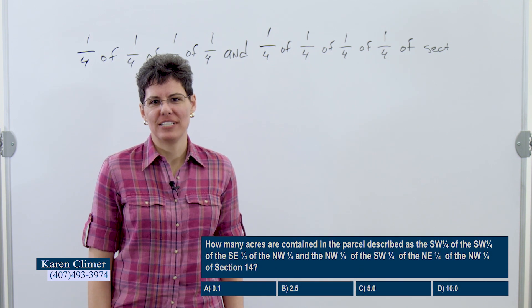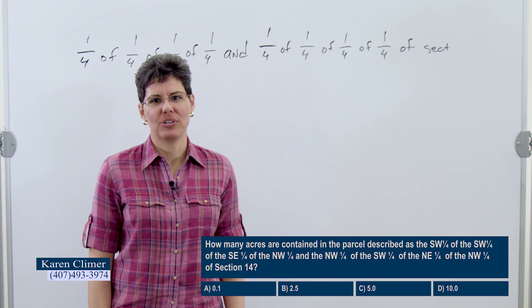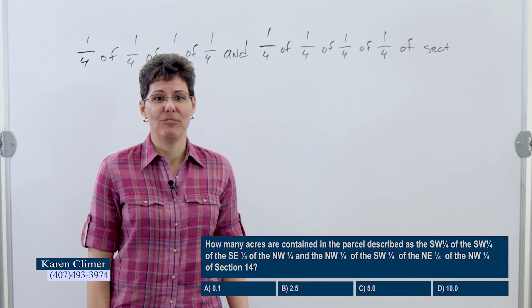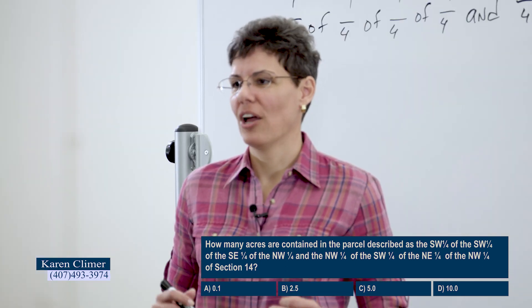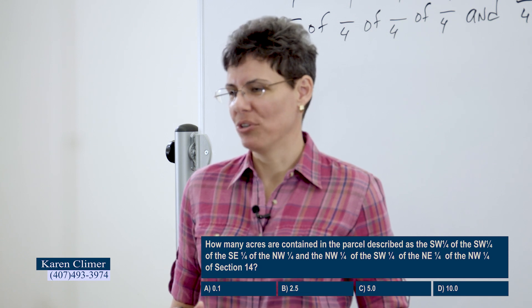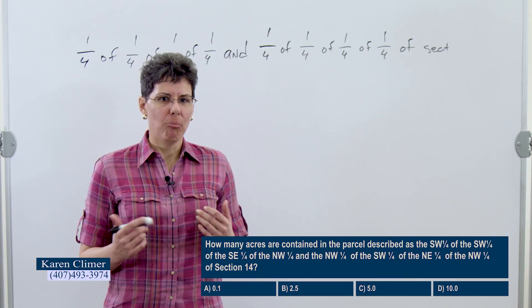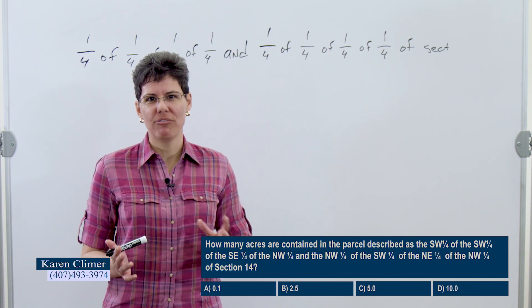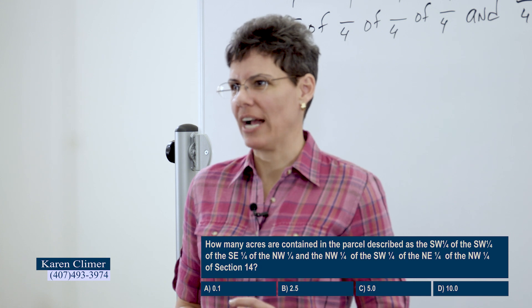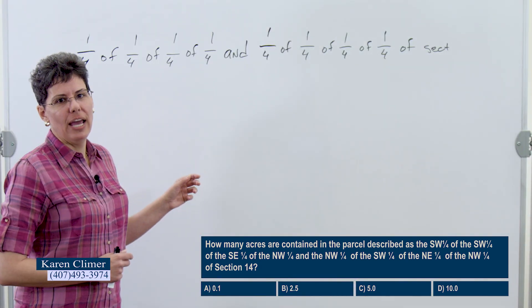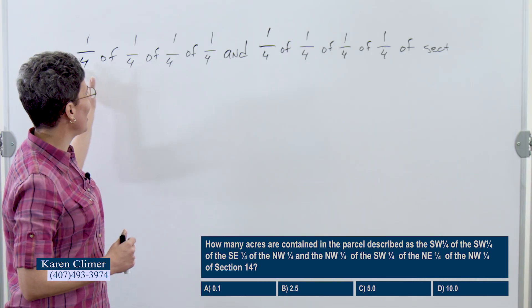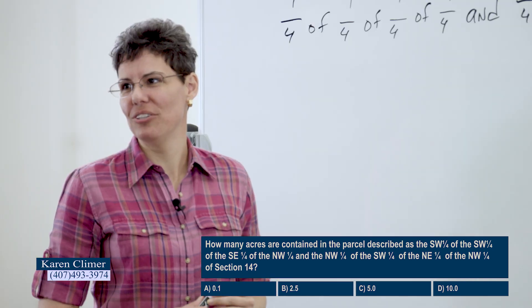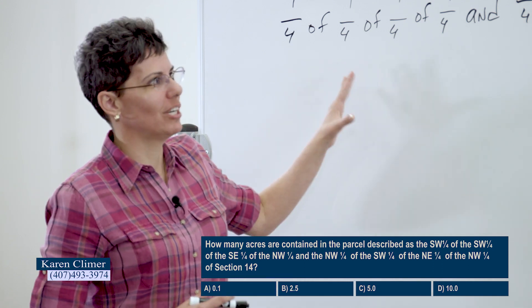Our question says: how many acres are contained in the parcel described as the southwest quarter of the southwest quarter of the southeast quarter of the northwest quarter, and the northwest quarter of the southwest quarter of the northeast quarter of the northwest quarter of section 14? The first thing you want to do is write that down on your sheet of paper. Don't try to do this from the screen. The southwest/northwest directions don't really matter — what matters is the fraction. But 'of's and 'and's are important, so get those. Be sure you have the right number; it's very easy to skip one when writing it down.